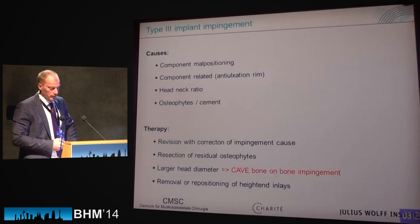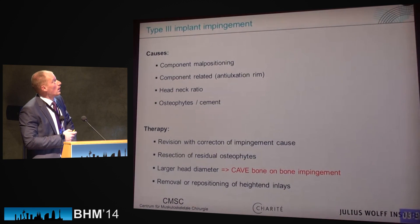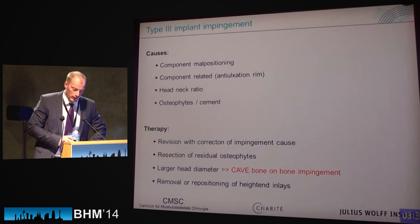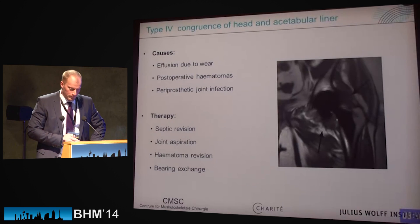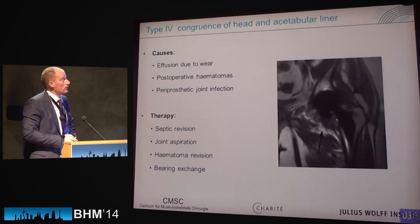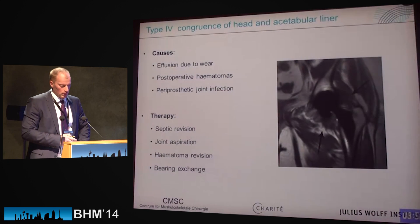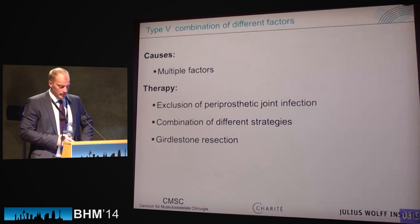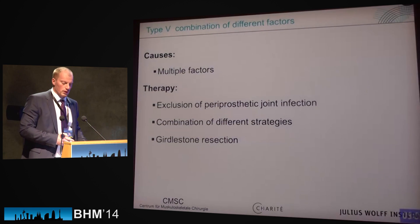Type 3 is an impingement problem caused by component malpositioning or component-related factors such as an anti-luxation rim, head-neck ratio problems, or osteophytes and cement residue. Revising this problem should be the solution. Type 4 means there is effusion into the joint expressing the head out of the acetabulum, caused by infection or wear, and therapy addresses these specific causes. Multiple combined problems may also be the reason; exclude infection and choose combined strategies.